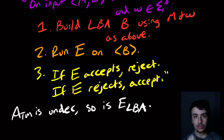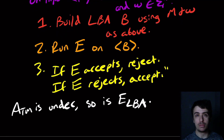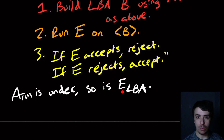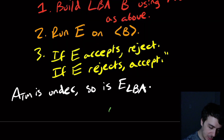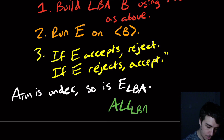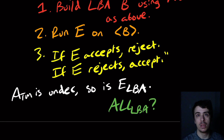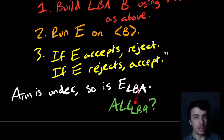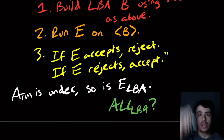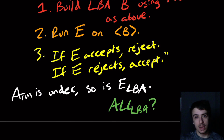This is quite striking — we get an undecidability result for something less powerful than a Turing machine. A question to think about: what about the universality problem, ALL_LBA? Before, emptiness and universality were either both decidable or both undecidable. Is there a case where E_LBA is undecidable but ALL_LBA is decidable, or are they both undecidable? That's an interesting open question. Leave your thoughts in the comments, please like and subscribe, and thanks for watching.